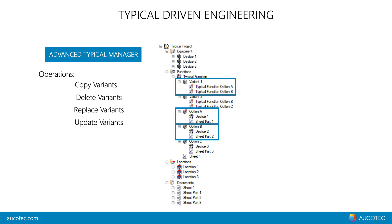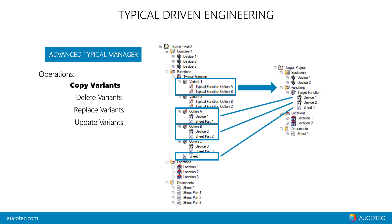The options can be associated to nearly everything inside of the project, like a normal function. If variant 1 of this typical is copied, the result is a combination of the function and its options. The structuring objects — in this case the variant and options — dissolve during the copy process, as you can see in the target project on the right side. Another great feature is the possibility to place optional sheet parts on other sheets, which I will explain on the next slide in more detail.